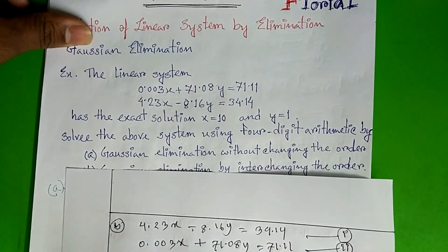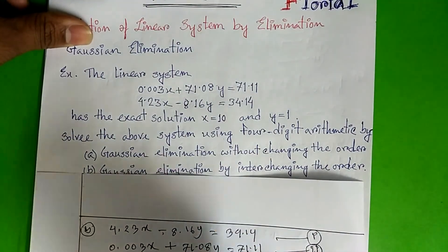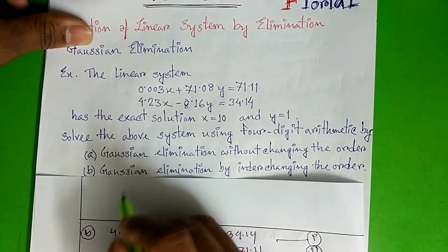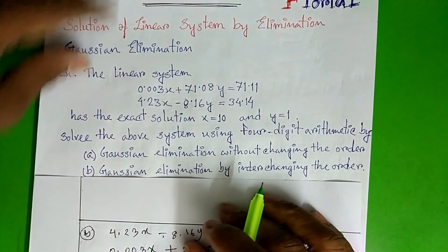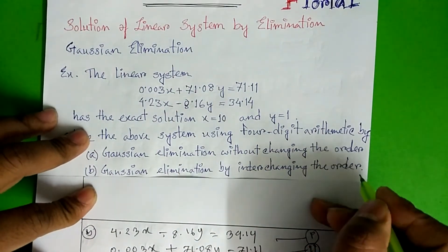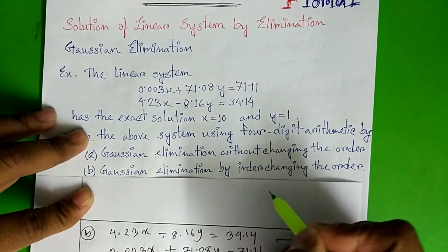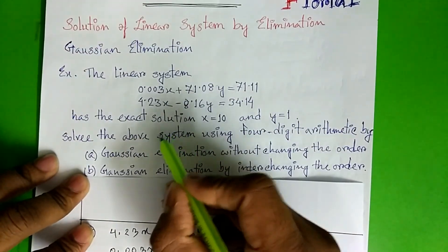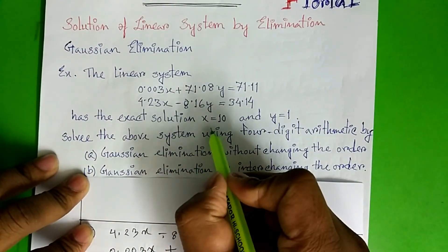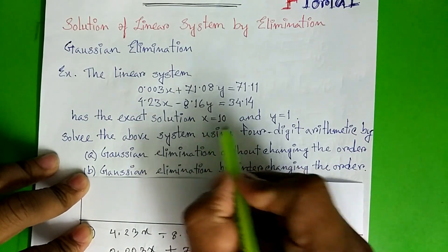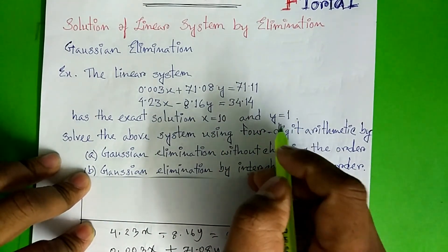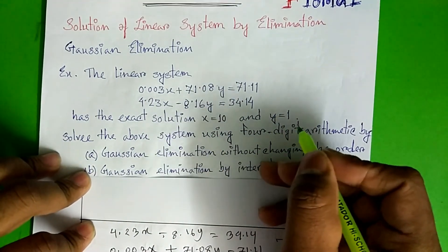This covers Gaussian elimination without changing the order, and Gaussian elimination by interchanging the order. We will see the exact solution: x is equal to 10 and y is equal to 1. Thank you.